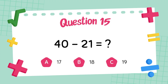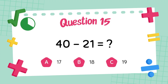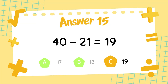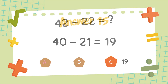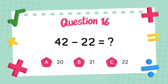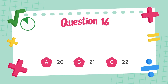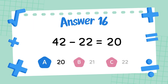What is 40 minus 21? The answer is 19. What is 42 minus 22? The answer is 20.